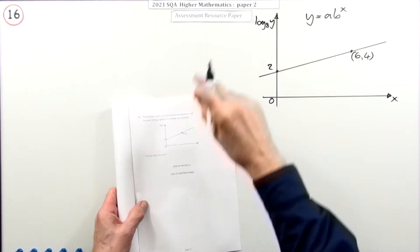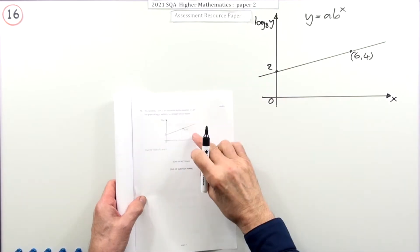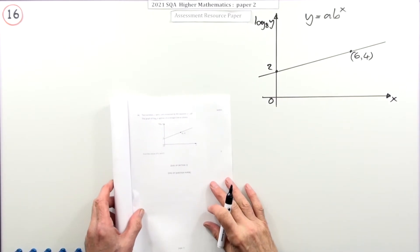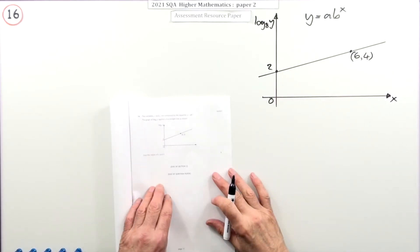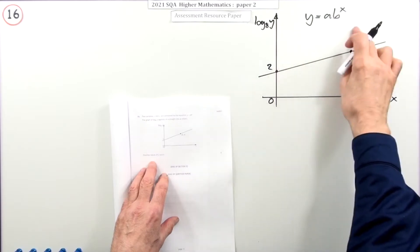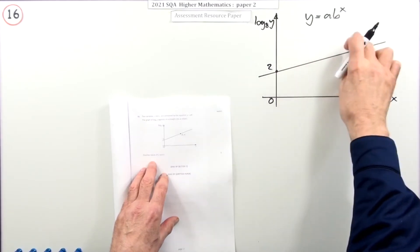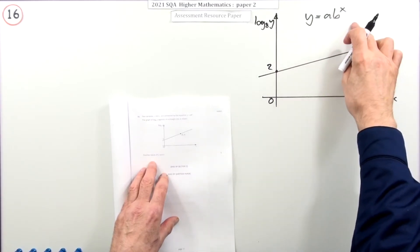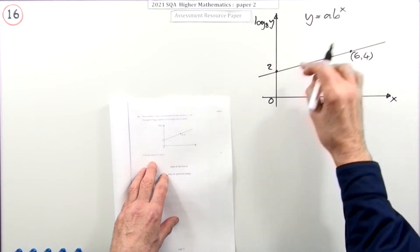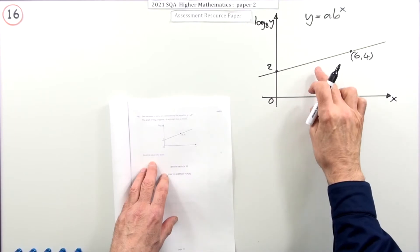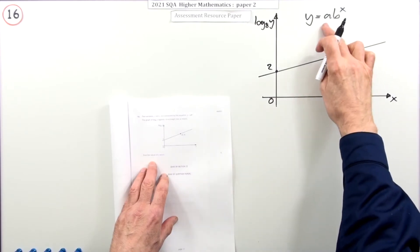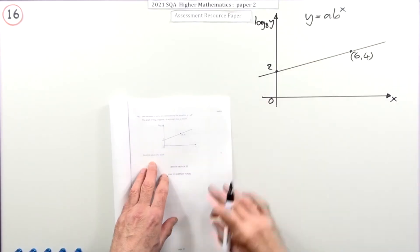So question 16 then from paper 2, the last question, the last one in part B, the section on circles and logs. Five mark question, and it's an experimental data type question, where you've got a suspected form of a relationship between two variables, and by taking logs you can actually confirm whether that's the case or not, and also thereby find the values of the two numbers in that equation.